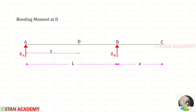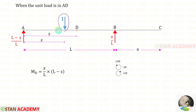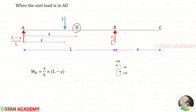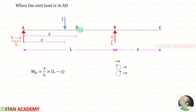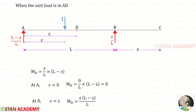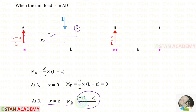Now we are going to draw the influence line diagrams for the bending moment at point D. We keep the unit load between points A and D at a distance of x from point A. To find the moment at D, that is MD, we use the left hand side rule. RB is acting in the anti-clockwise direction so it will be positive. The distance is L minus Z. At point A, x equals 0, so MD equals 0. At point D, x equals Z, so MD equals Z(L minus Z) upon L.